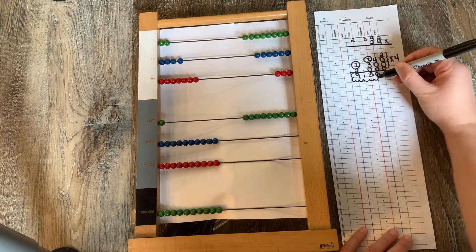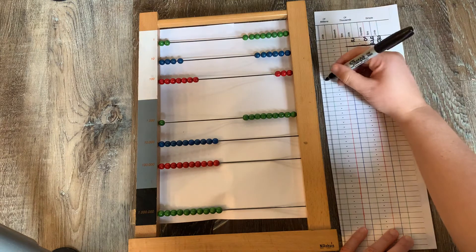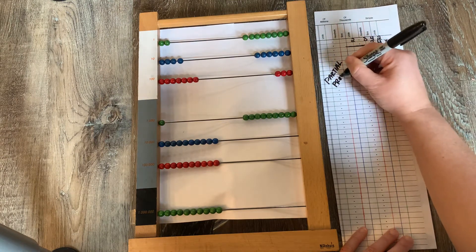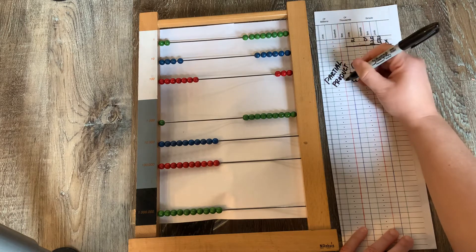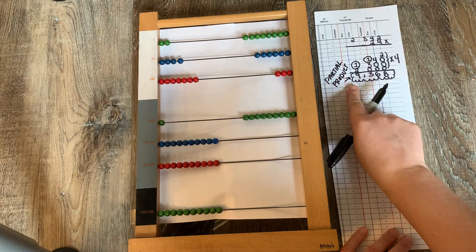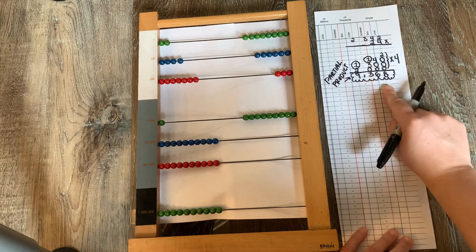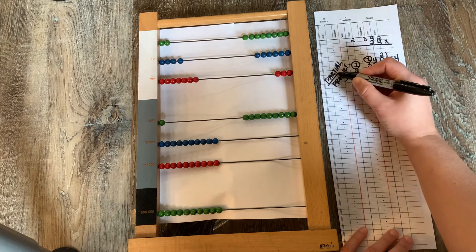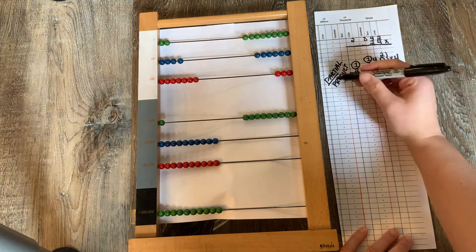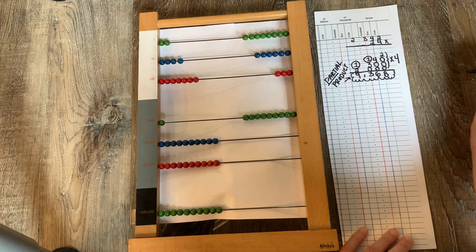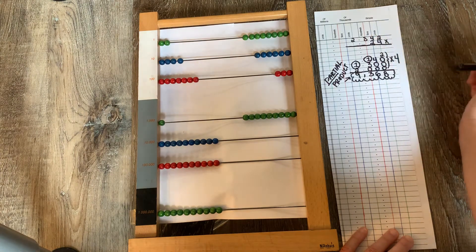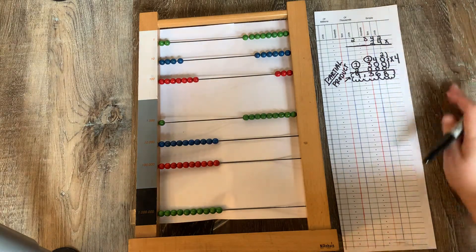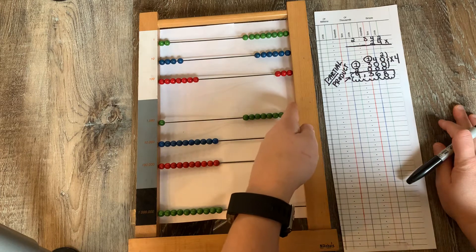We call this a partial product. This means we have part of the answer. In the word partial, I see the word part and product means answer. So I have part of the answer. And why is that? Well, because I still have that 2 right there. And that two tens needs to be multiplied by the multiplicand. So let's start the second part of the problem.